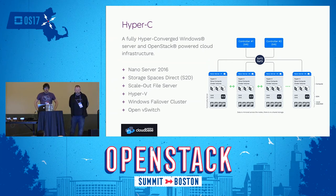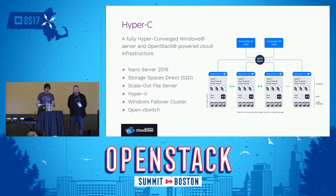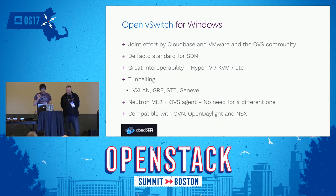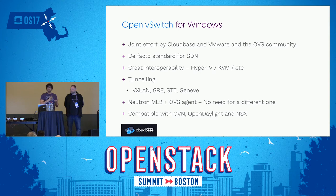HyperC is a fully converged Windows Server and OpenStack-powered cloud infrastructure. We use the best things from Windows Server and what we develop upstream in OpenStack: Nano Server 2016, Storage Spaces Direct, Scale-Out File Server, Hyper-V, Windows Failover Cluster, Open vSwitch, and so on. We ported Open vSwitch to Windows — it's the lingua franca for software-defined networking in OpenStack. We worked upstream in the OVS project with VMware and the OVS community, and we are extremely happy about the results. You can have KVM and Hyper-V nodes in the same identical cloud.